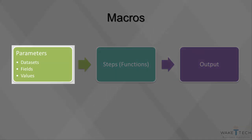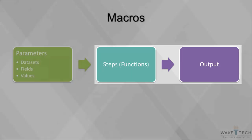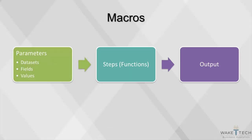For instance, with a certain dataset, you may want to filter, sort, and then take the average of a field. If this set of steps will be used multiple times or for different datasets, you may want to transform these steps into a macro to save time.